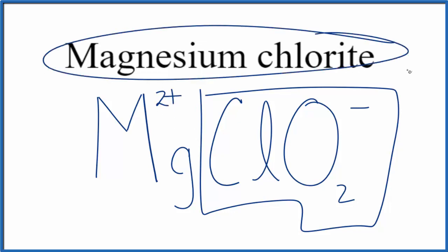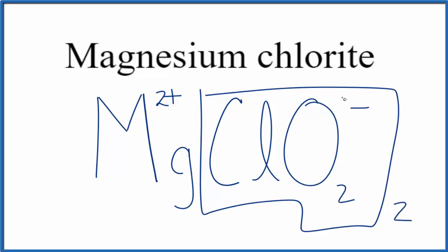Since this is a neutral compound, we don't have the word ion after it, these charges need to add up to zero. We have a one minus here. If we had two of these chlorite ions, two times the one minus, that's two minus, that would balance out the two plus, giving us a net charge of zero.